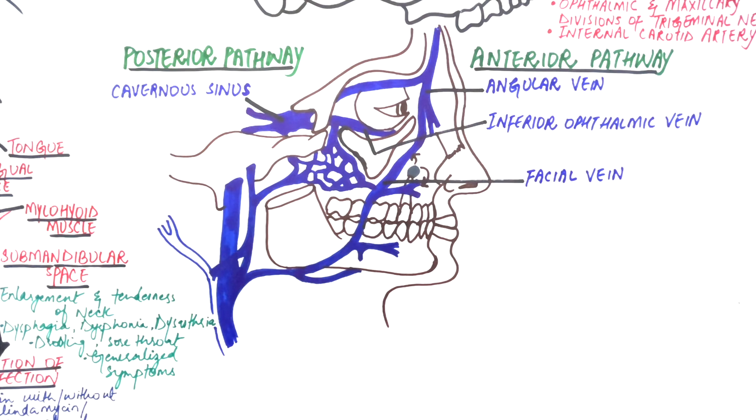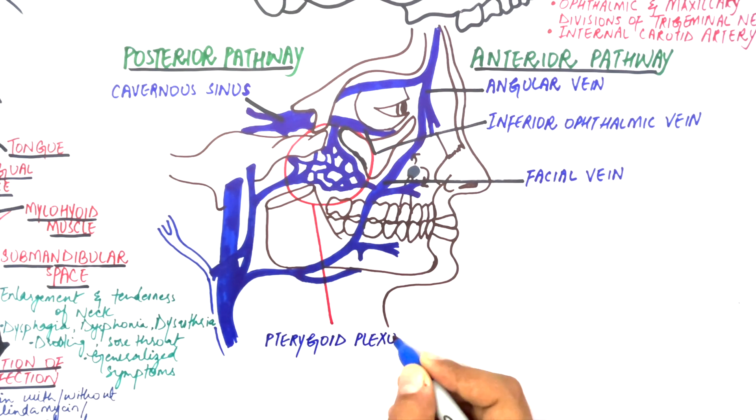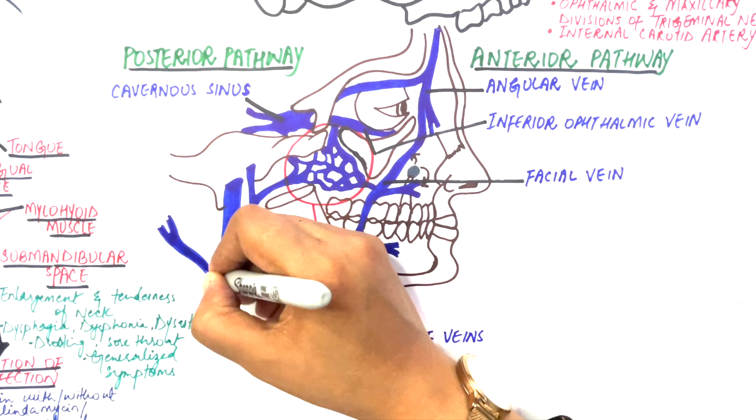The infection from a posterior pathway involves spread of infection through a premolar or molar tooth into the buccal or infratemporal space and then to the pterygoid venous plexus to the inferior petrosal sinus and ultimately can spread into the cavernous sinus.